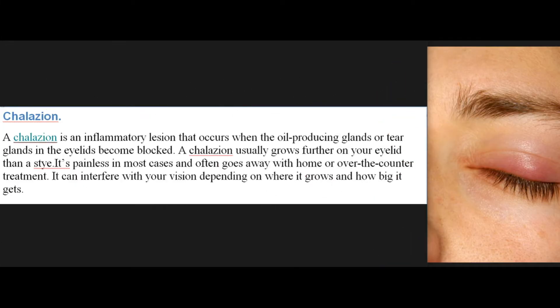Chalazion: A chalazion is an inflammatory lesion that occurs when the oil-producing glands or tear glands in the eyelids become blocked. A chalazion usually grows further on your eyelid than a stye. It's painless in most cases and often goes away with home or over-the-counter treatment, though it can interfere with your vision depending on where it grows and how big it gets.